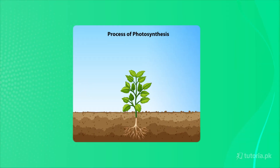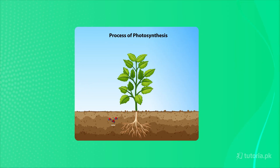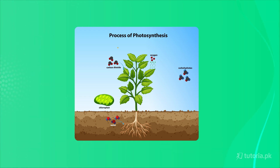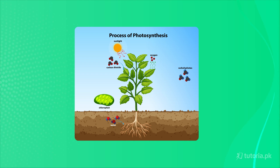Photosynthesis's raw materials are water and carbon dioxide. We also need chlorophyll and sunlight. And the end result is that glucose is created in the plant.